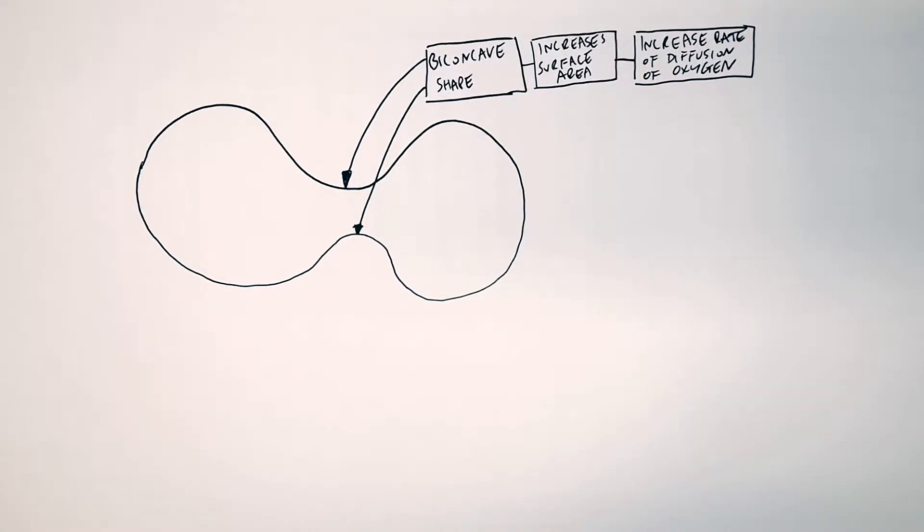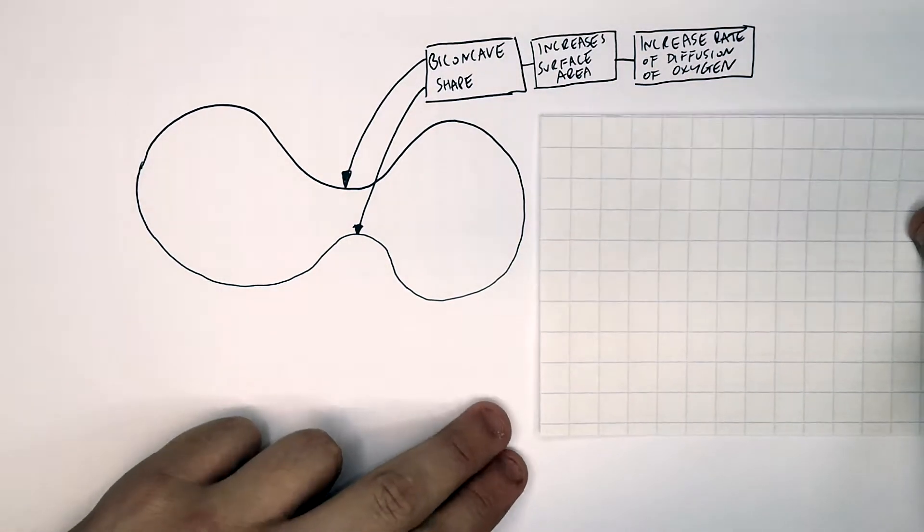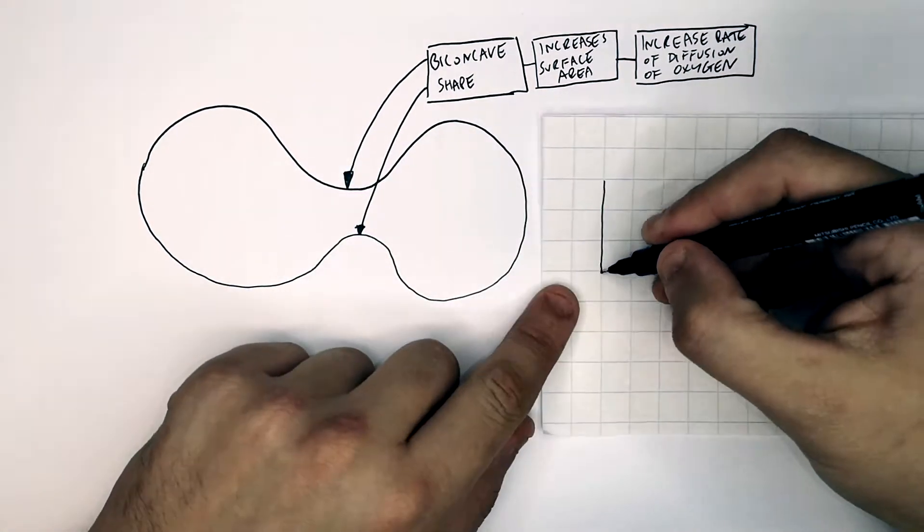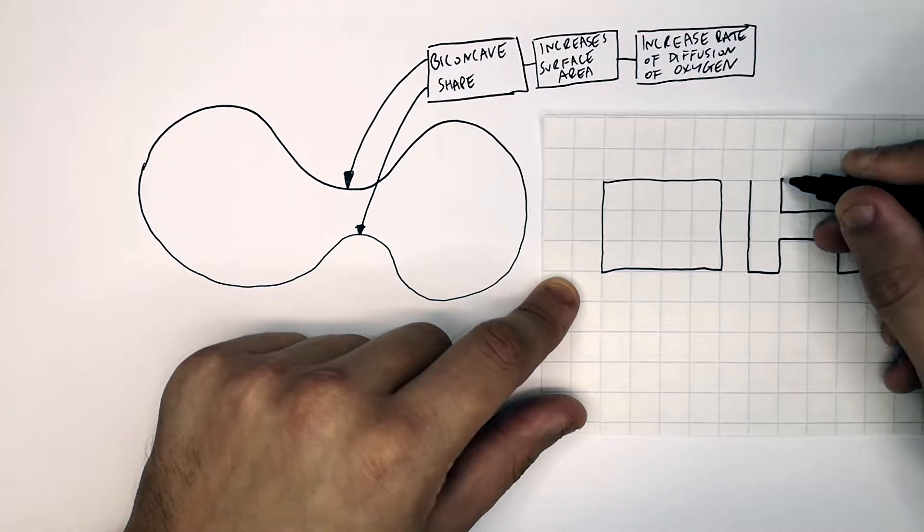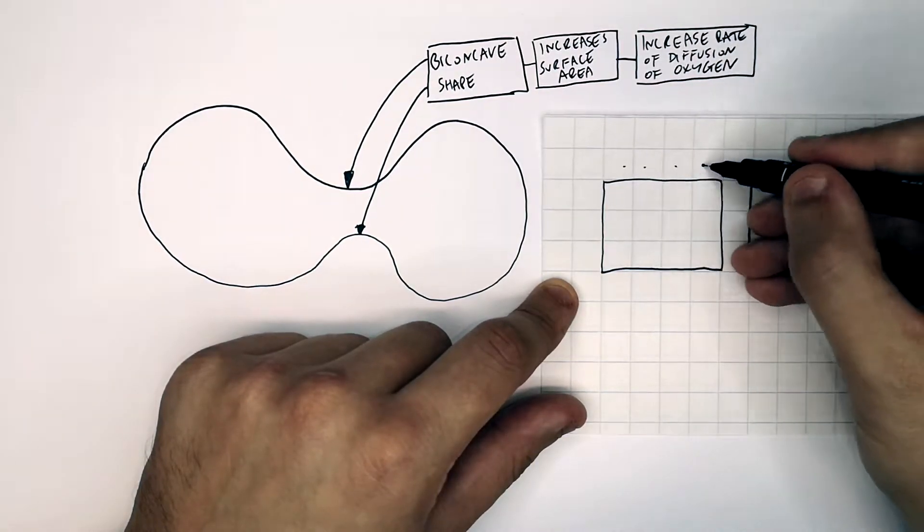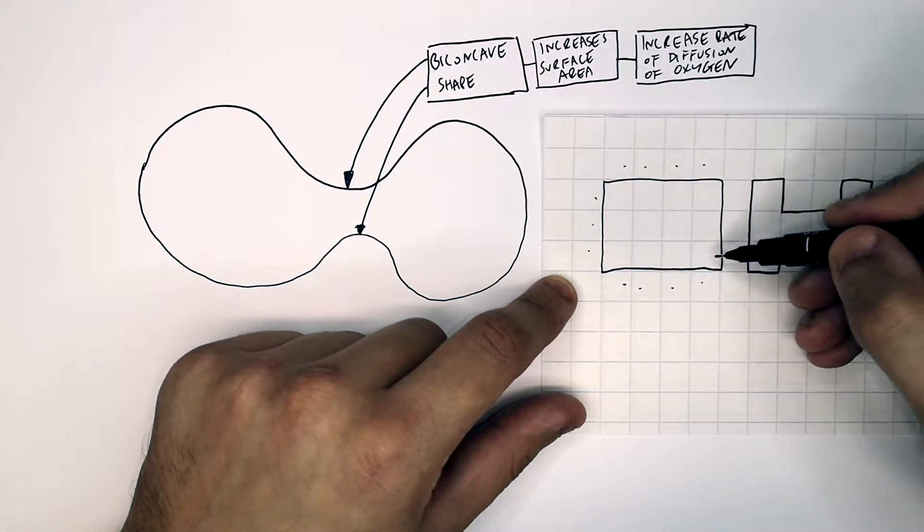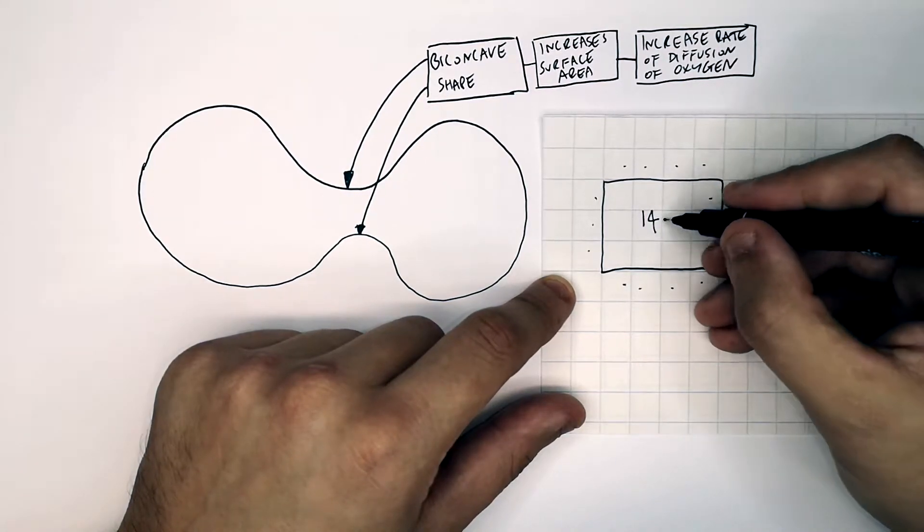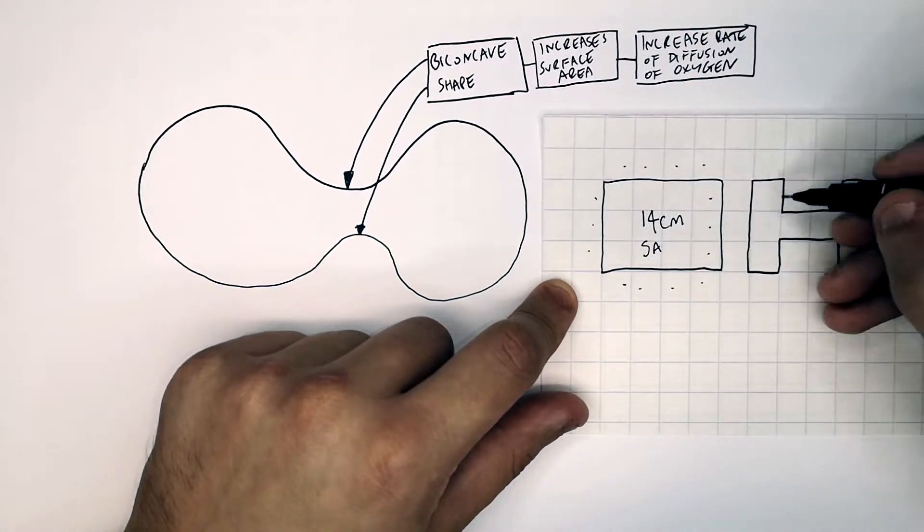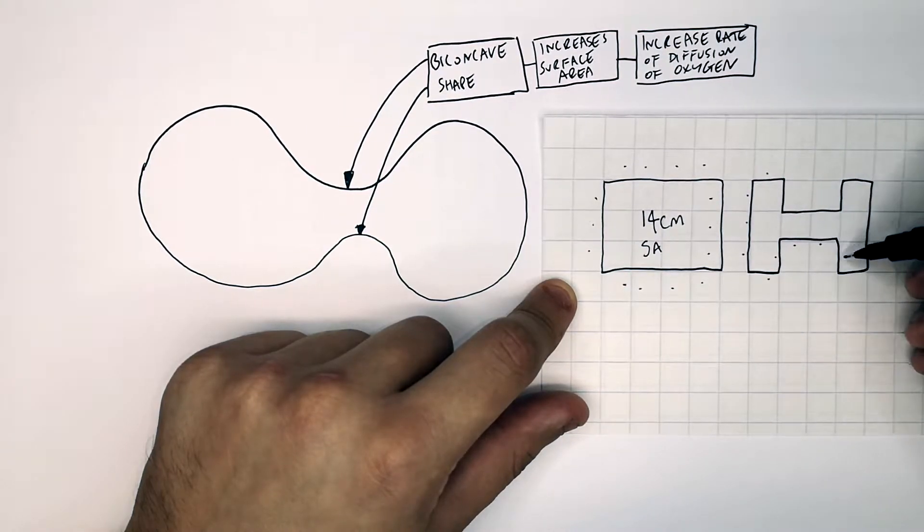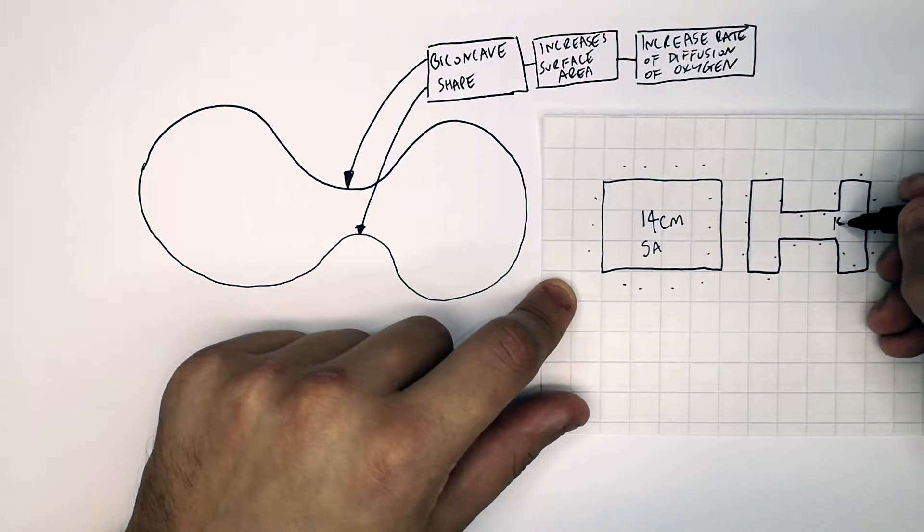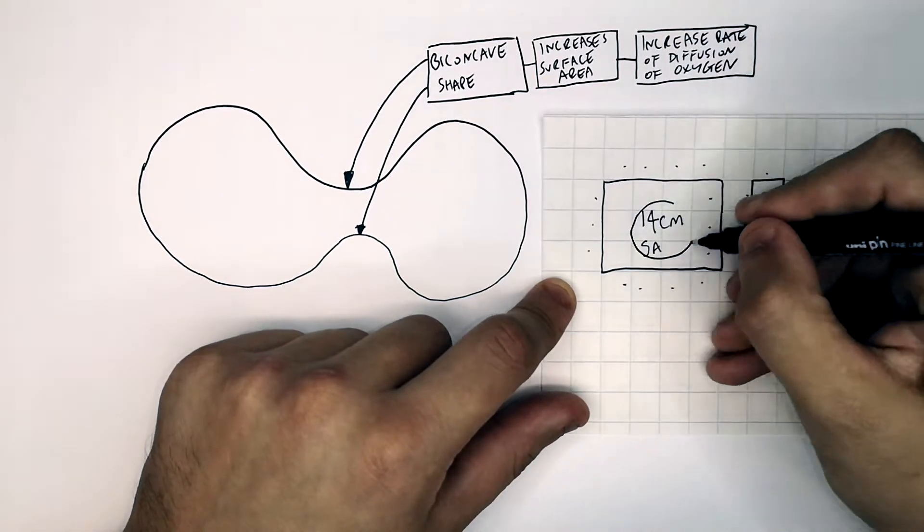I'm now going to compare the surface areas of a cell with a biconcave and without a biconcave shape. So this is without a biconcave shape, and this red blood cell has a biconcave shape, as you can see. So these are the entry points for the non-biconcave red blood cell. So there's 14 centimeters of surface area, whereas on the biconcave red blood cell, there are going to be 18 entry points as 18 centimeters of surface area.